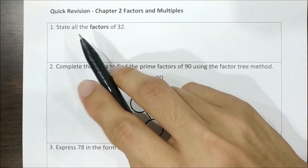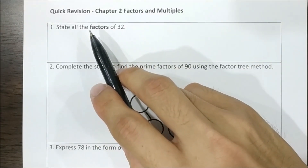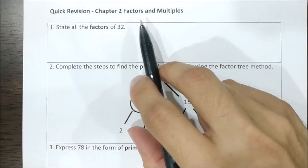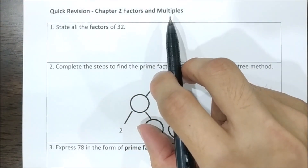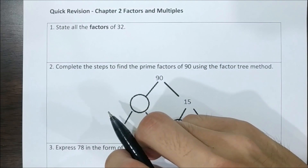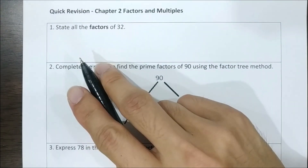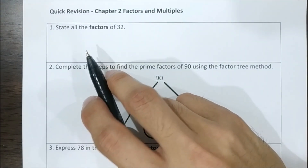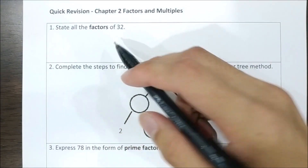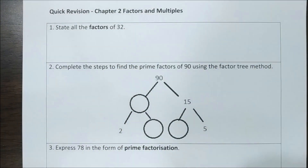Hello everyone, we're going to do a very quick revision on chapter 2, factors and multiples, by using all this exercise. So the first one: state all the factors of 32.